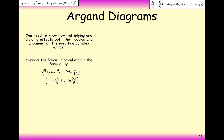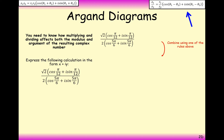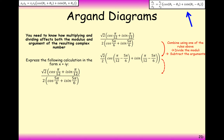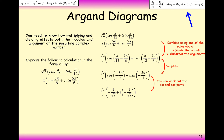Now let's try a division: √2(cos π/12 + i sin π/12) divided by 2(cos 5π/6 + i sin 5π/6). We divide the moduli and subtract the arguments. So we get (√2/2)(cos(π/12 − 5π/6) + i sin(π/12 − 5π/6)). Simplifying the argument gives −3π/4. So the result is (√2/2)(cos(−3π/4) + i sin(−3π/4)), which expands to −1/2 − 1/2·i.